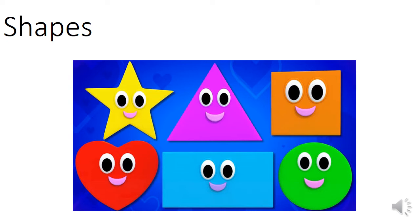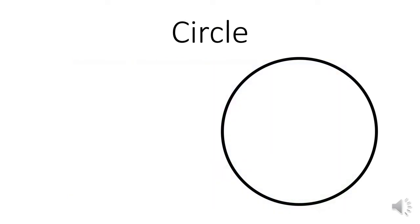Hello kids, this is the teacher. Today we will learn in math about shapes. The first shape with us today is the circle. This is a circle, and as you can see, it's a round shape. It doesn't have any sides or any corners — no sides and no corners.